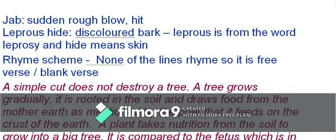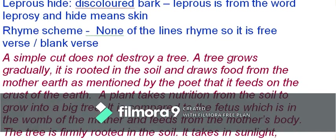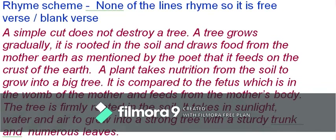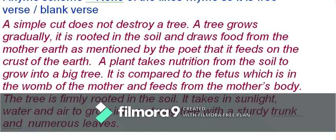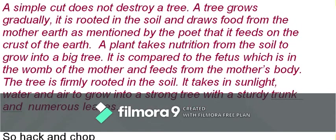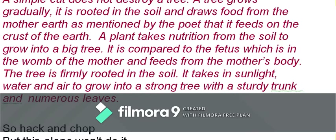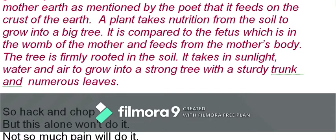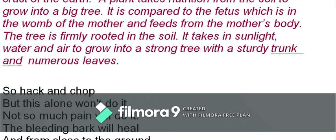A simple cut does not destroy a tree. A tree grows gradually, rooted in the soil, drawing food from the earth — feeding on its crust. The tree is compared to a fetus in the womb of its mother, taking nutrition from the soil to grow into a big tree. It absorbs sunlight, water, and air — essential requirements — developing a sturdy bark and numerous leaves.